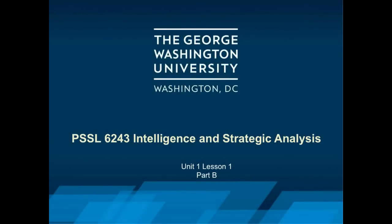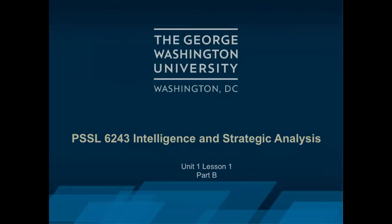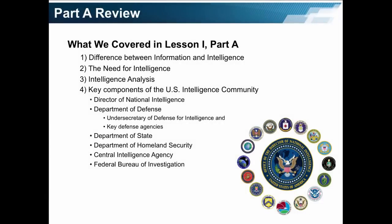I hope you found Lesson 1, Part A helpful. I also hope you are enjoying the course, sharing with your classmates, and collaborating with them in our communal learning. Before we move on to Part B, let us review quickly what we covered in Part A. In Part A, we focused on the difference between information and intelligence, why intelligence is needed, and on the fact that analysis is the critical requirement to turn information into intelligence. We then moved on to the key components of the U.S. intelligence community, focusing on the tasks and responsibilities of those departments and agencies listed in Part A.